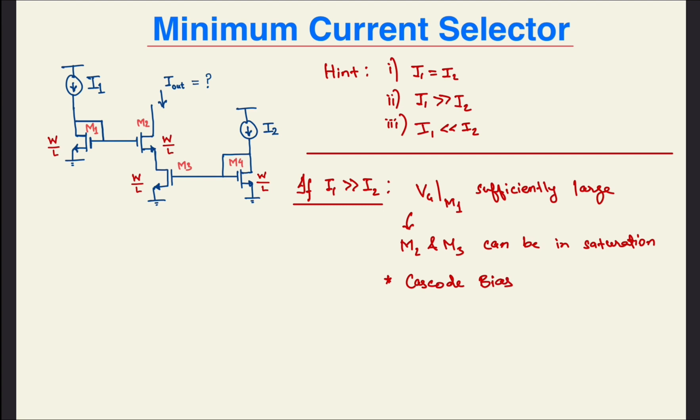Moreover, if the gate voltage of M2 is sufficiently large, then so will its source voltage be, and thus M3 can be in saturation as well. This is indeed a way to generate a cascode bias voltage, where M2 is the cascode bias device and M3 is the main current source carrying the current of I2.